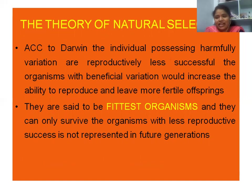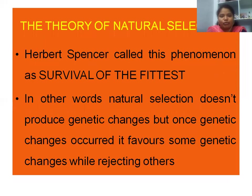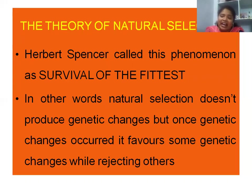After spending time on islands, Darwin developed a theory implying that all species derived from common ancestors through a process called natural selection. Natural selection is the biggest factor resulting in the diversity of species and their genomes. According to Darwin, individuals possessing harmful variations are reproductively less successful, while organisms with beneficial variations increase their ability to reproduce and leave more fertile offspring — these are said to be the fittest organisms, and only they survive. Organisms with less reproductive success are not represented in future generations.